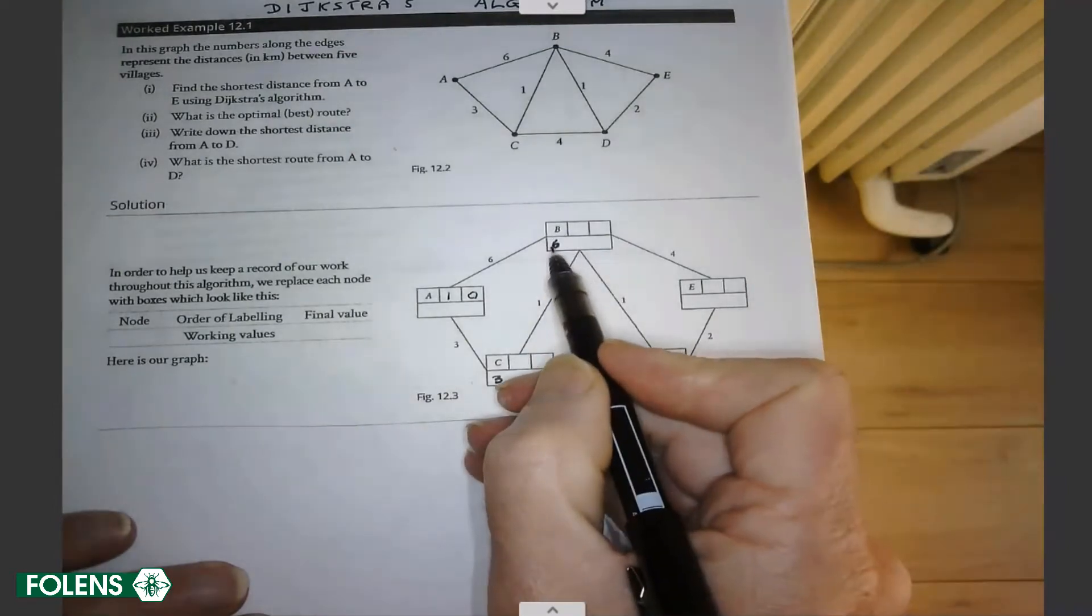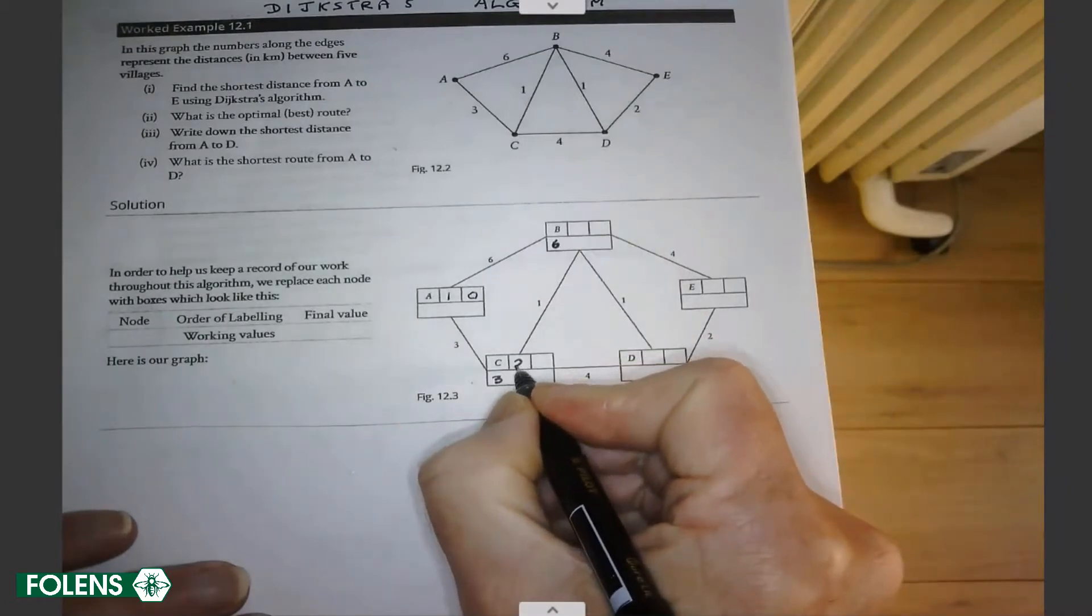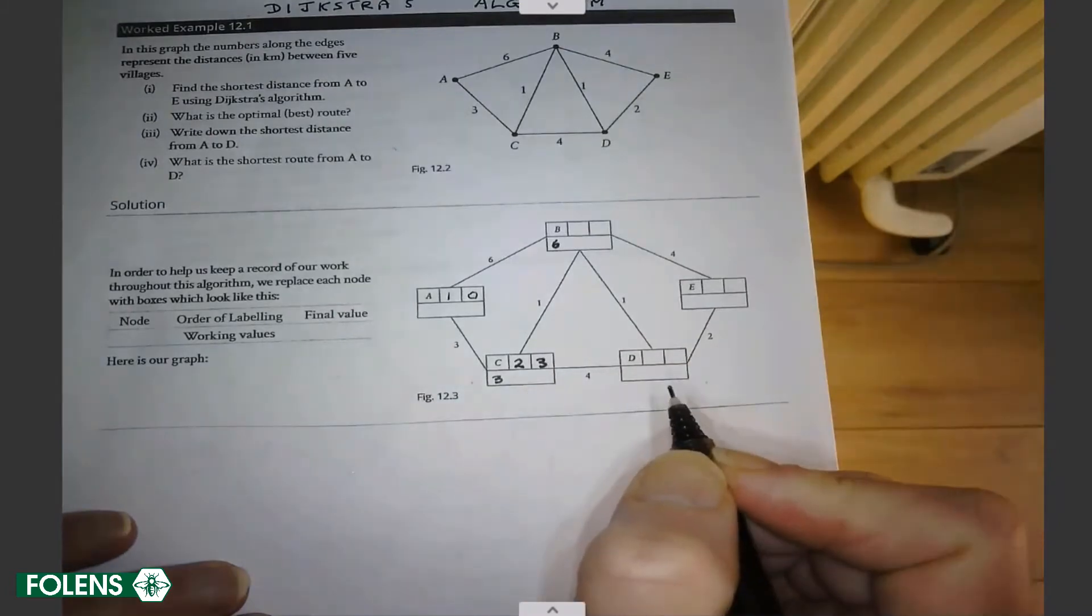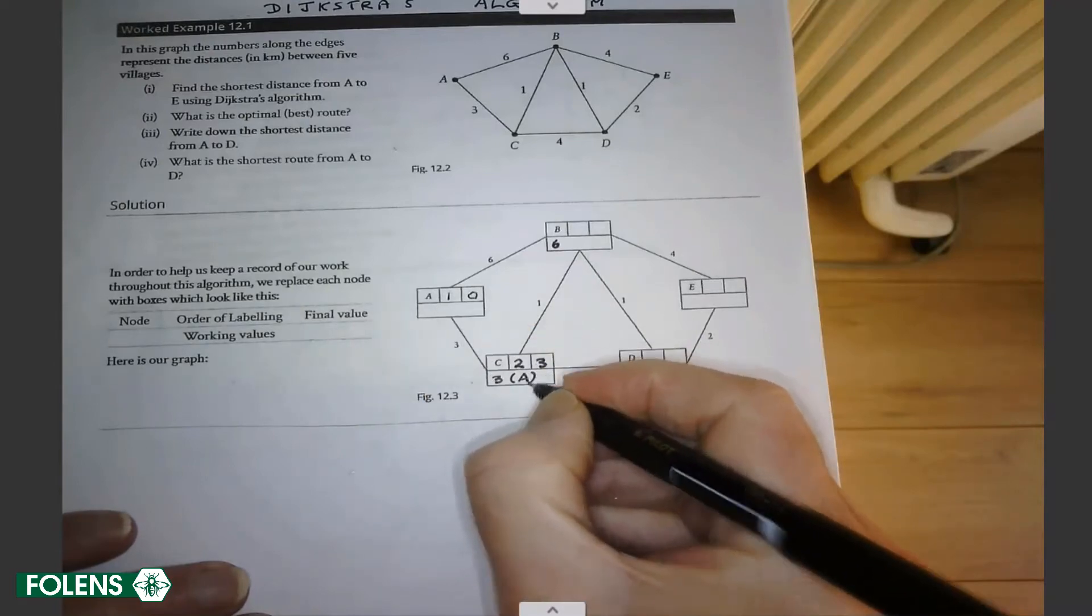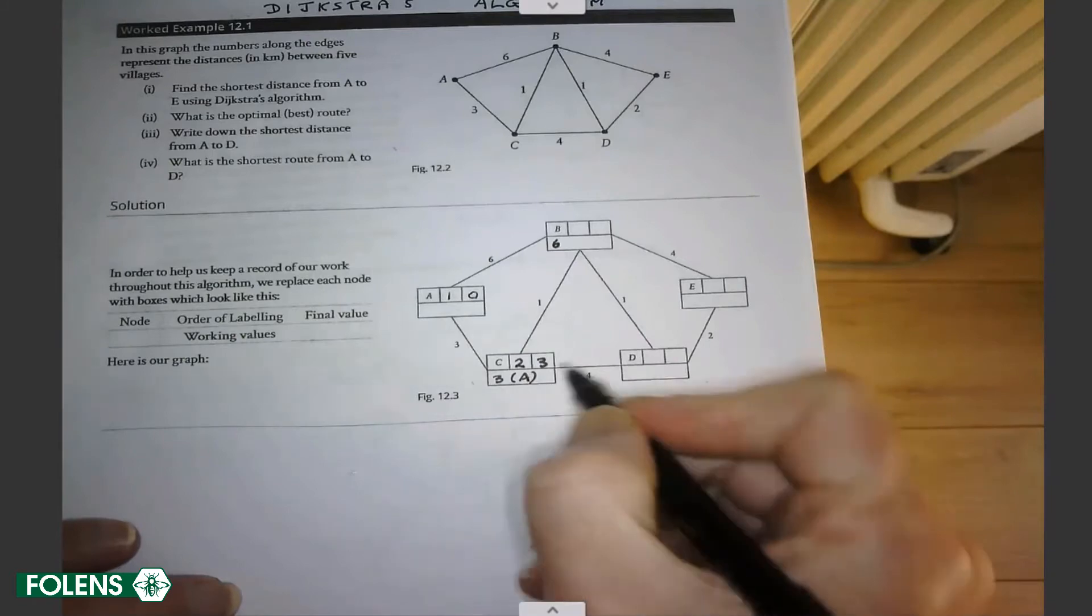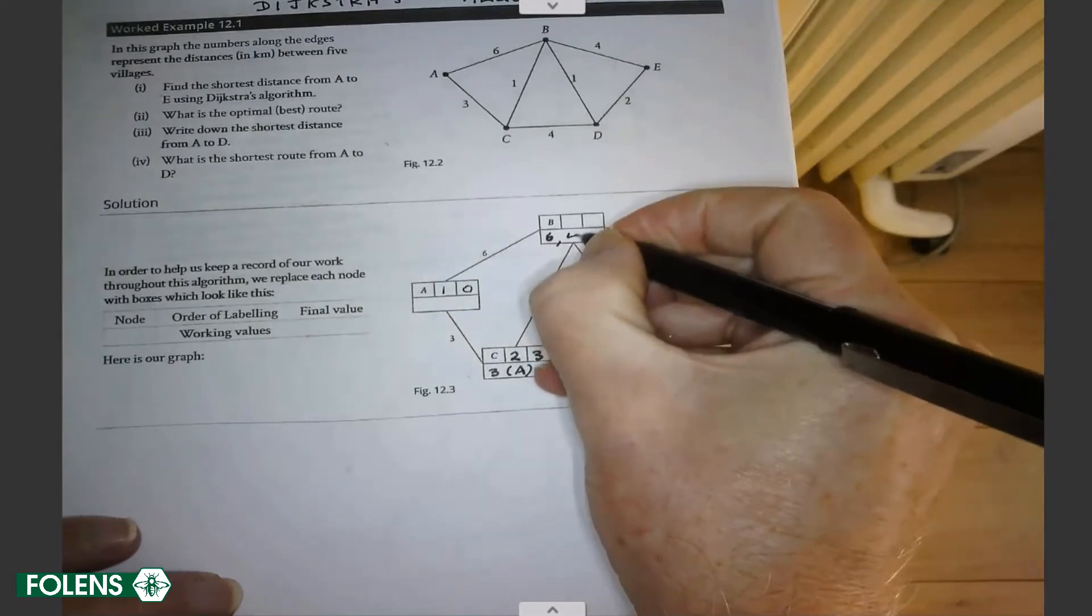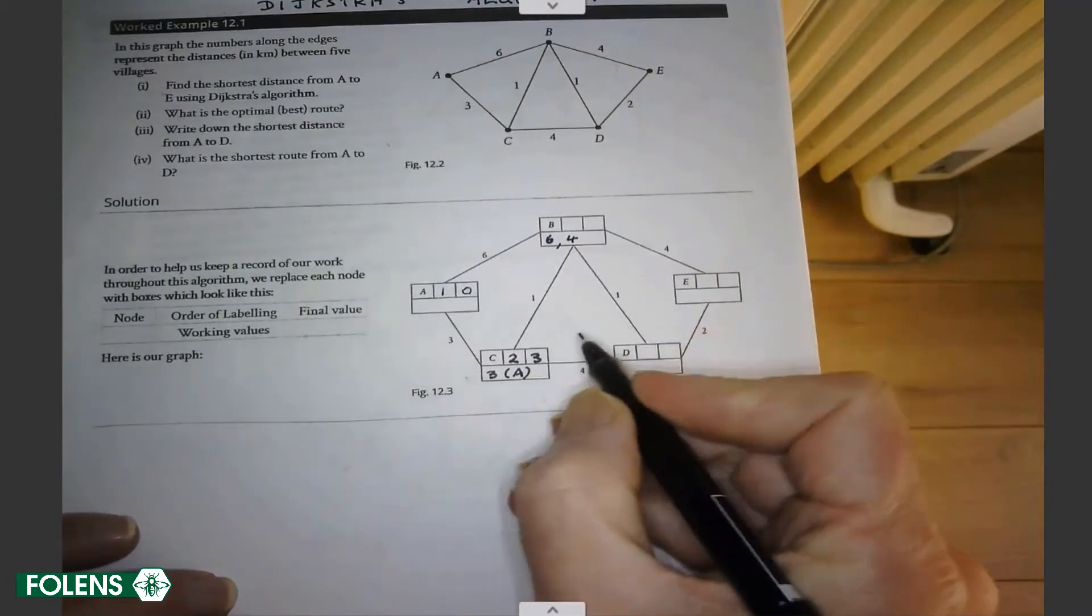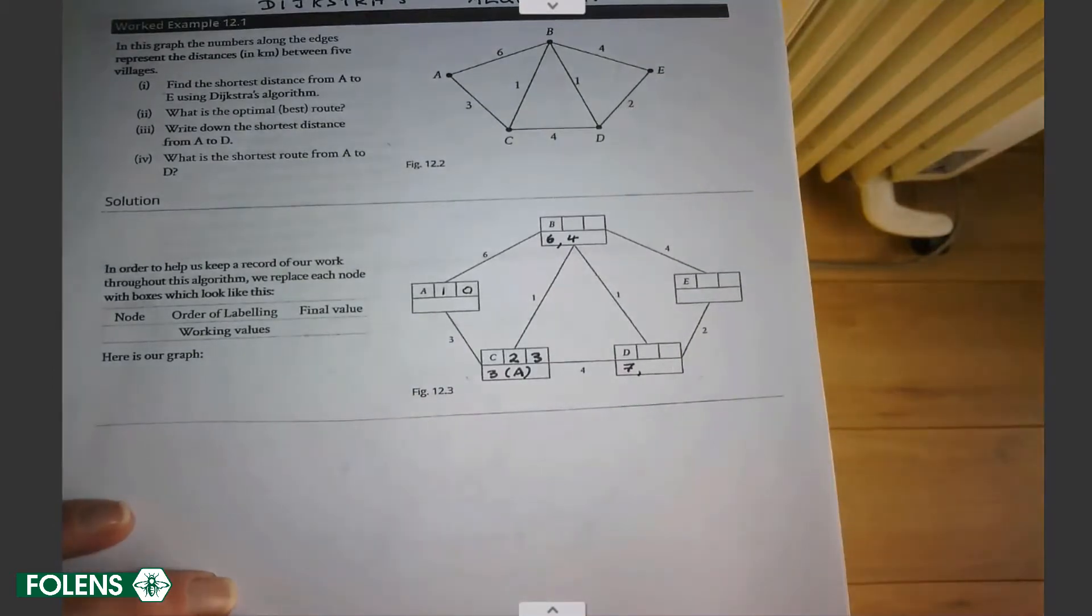So A goes to B would be six and A goes to C it's length with three. And you don't put any other working values except the ones that lead from one that has a final value. Next, you examine the final values of anyone that has a working value. The rest don't. The lowest of those is three. Three is lower than six. So C becomes our second working value and it's got a working value of three. And it is a very good idea to say, where did it come from? It came from A. That's very handy at the end to work backwards to find where did you come from. So C is now our second working value. C goes to D and it also goes to B.